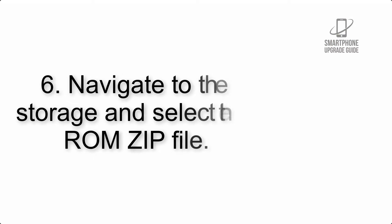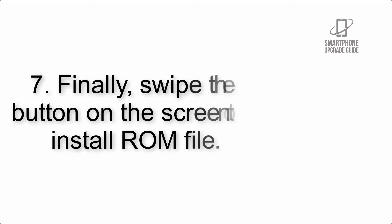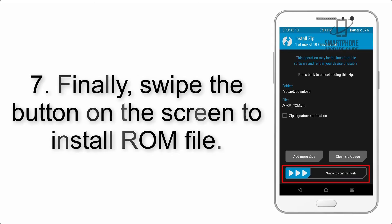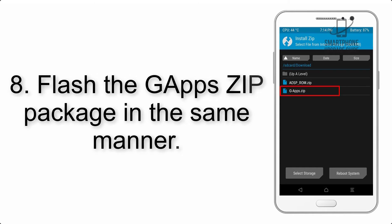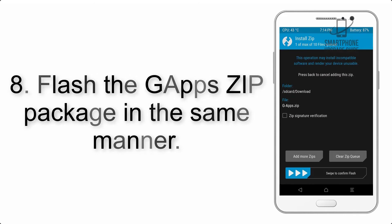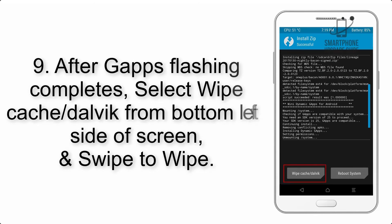Step 5: Go back to the recovery main screen and tap on the Install button. Step 6: Navigate to the storage and select the ROM zip file. Step 7: Finally, swipe the button on the screen to install the ROM file.